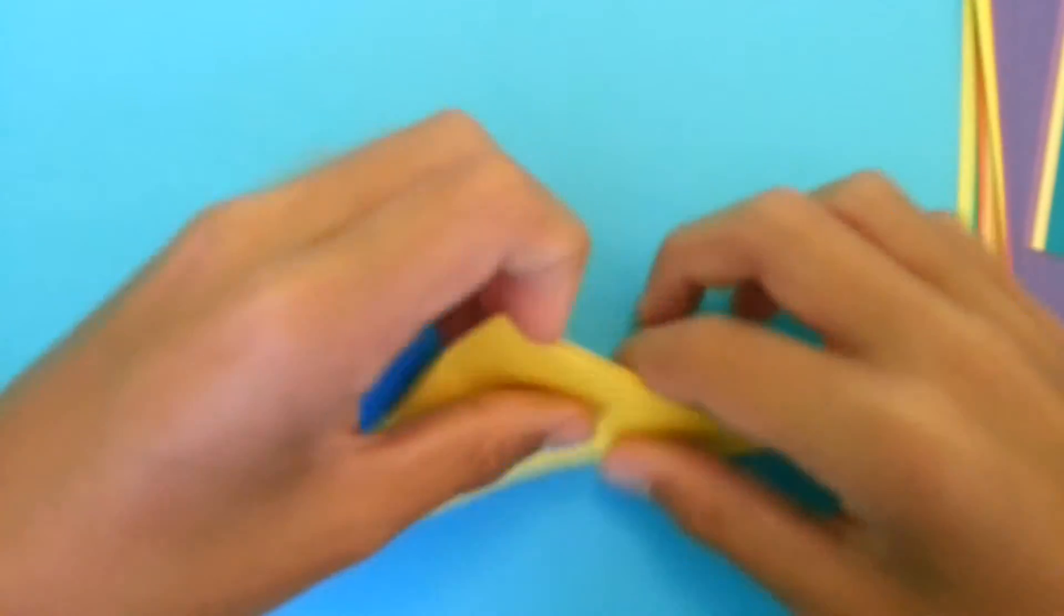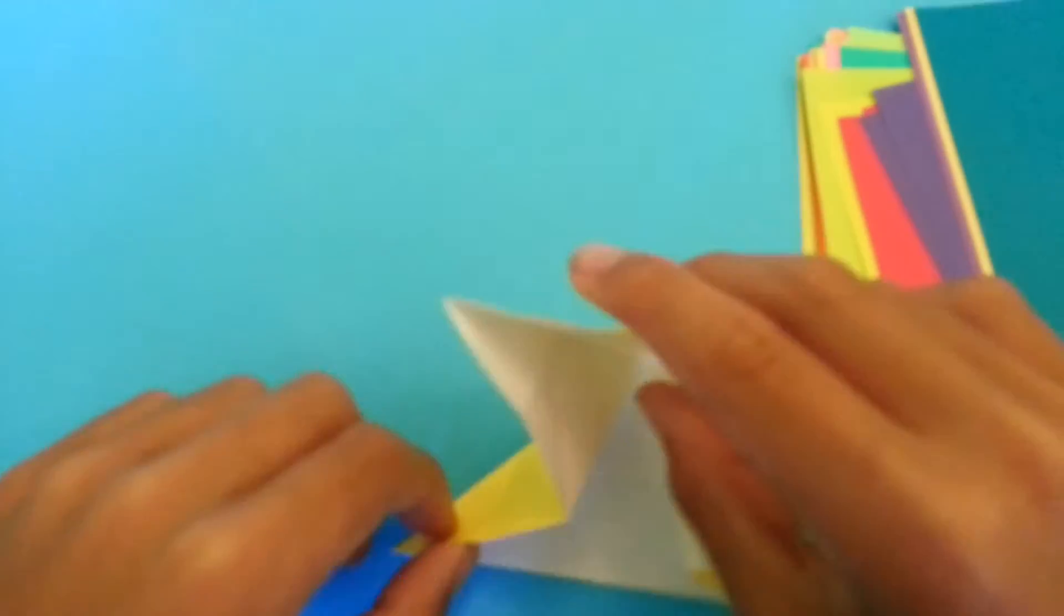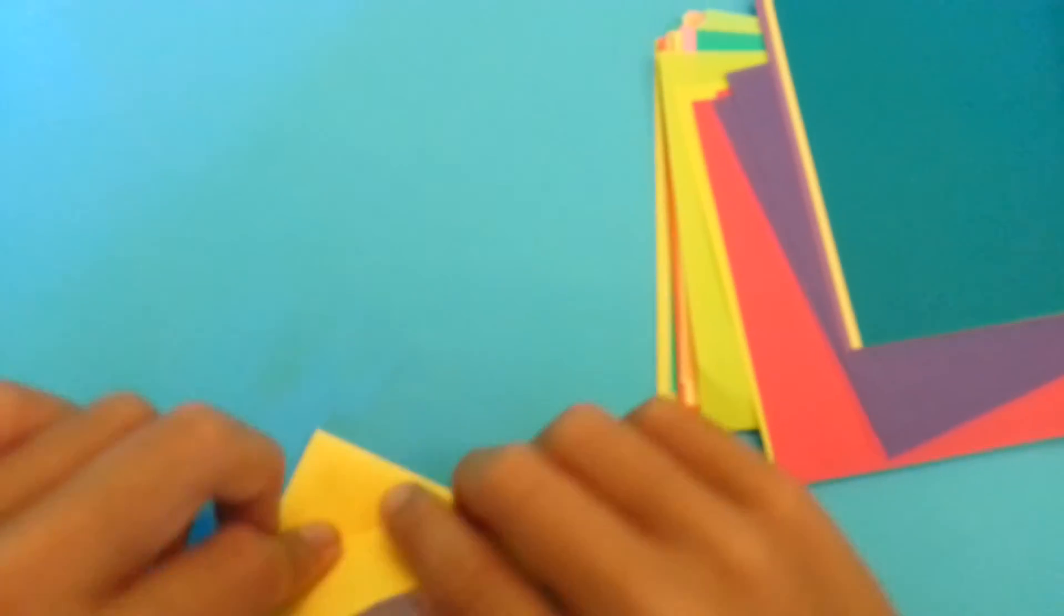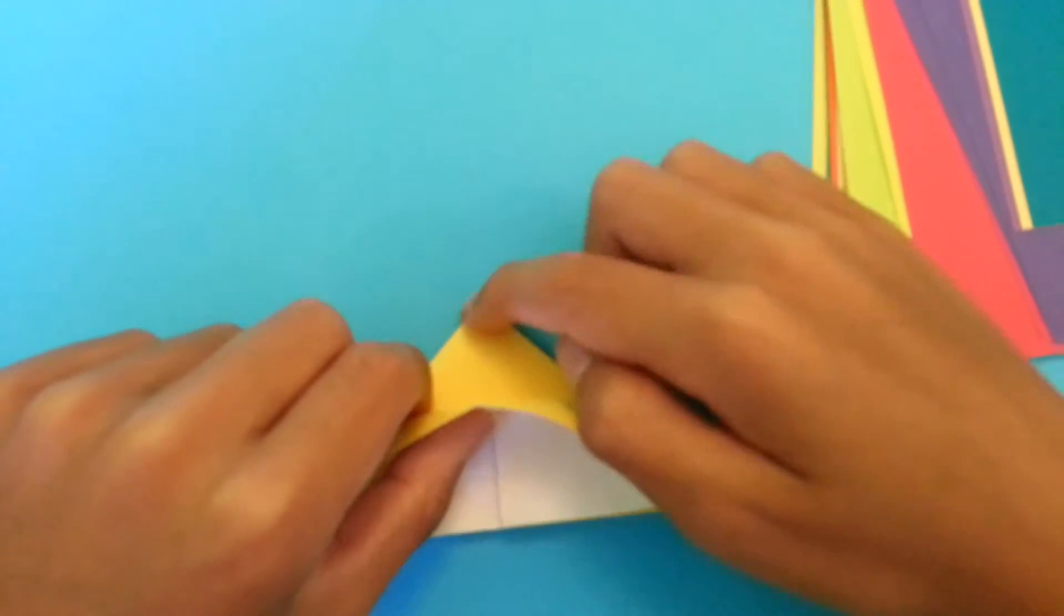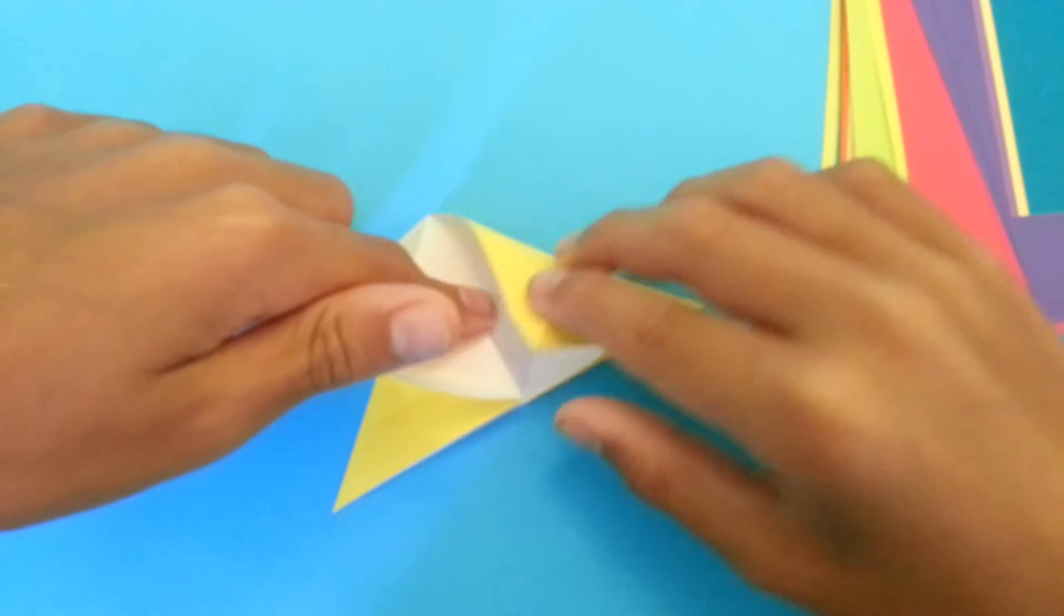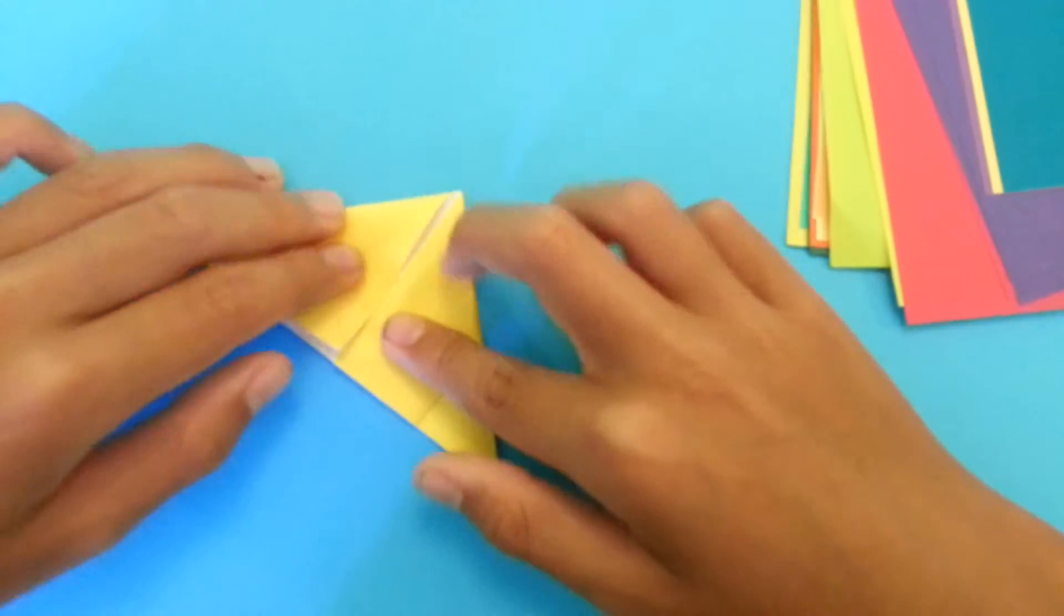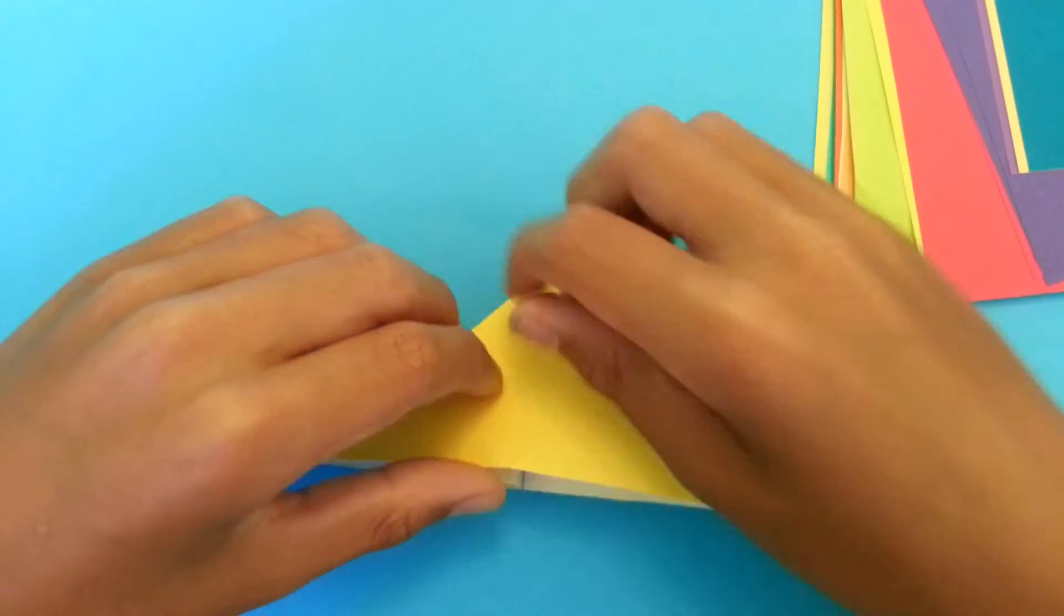Now we're going to fold this flap up so that this edge hits this corner, and now I'm going to squash fold these two flaps. Turn it over and do the same thing.